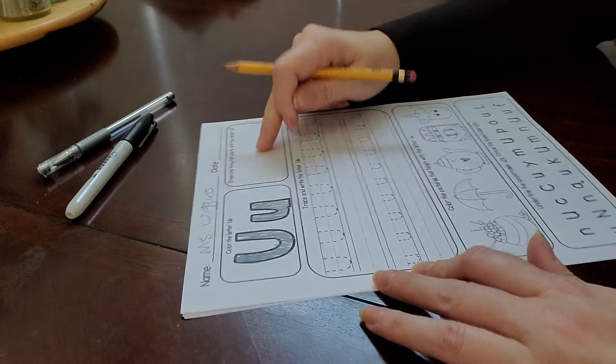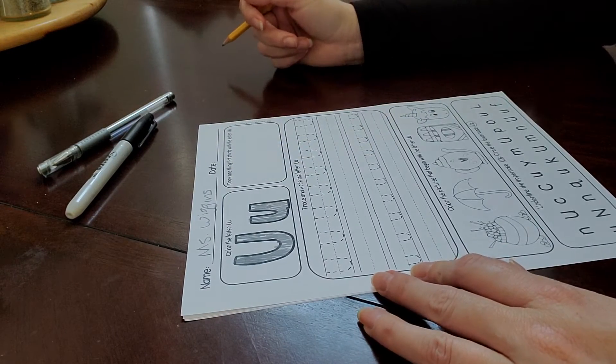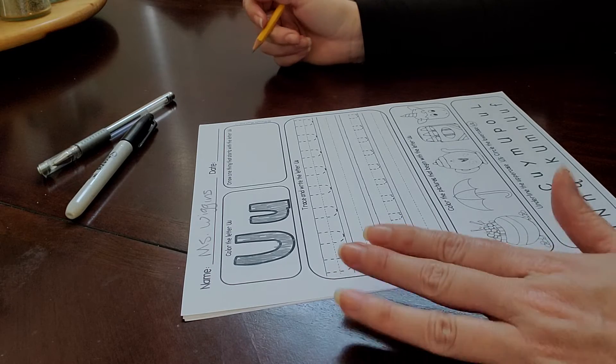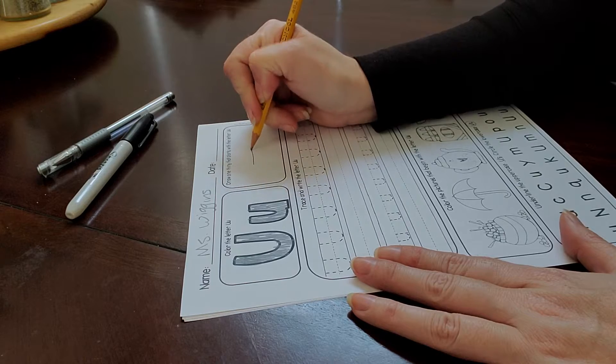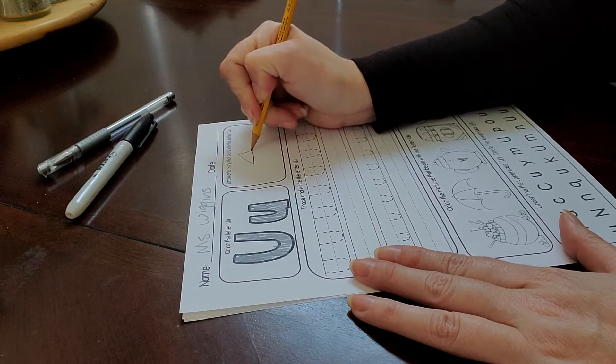And then we need to draw something that starts with a U. So I'm going to draw an arrow that says up.